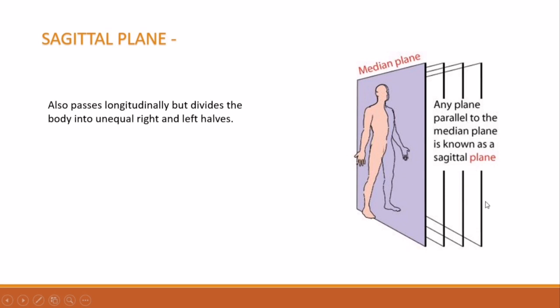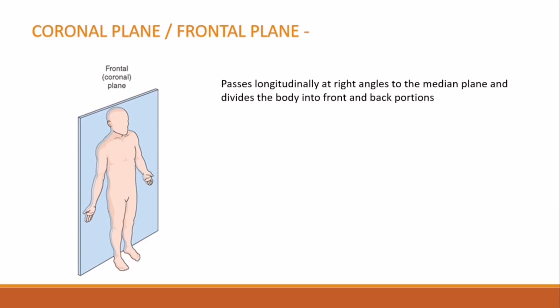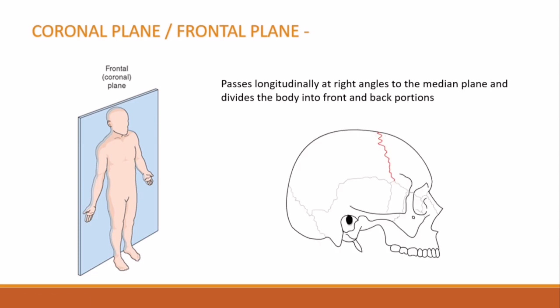Second is the sagittal plane. Any plane parallel to the mid-sagittal or median plane is termed the sagittal plane. This plane also passes longitudinally but divides the body into unequal right and left halves. Third is the coronal plane, also called the frontal plane. This plane passes longitudinally at right angles to the median plane and divides the body into front and back portions.